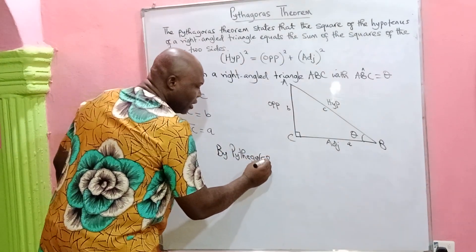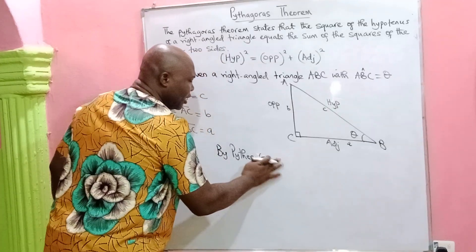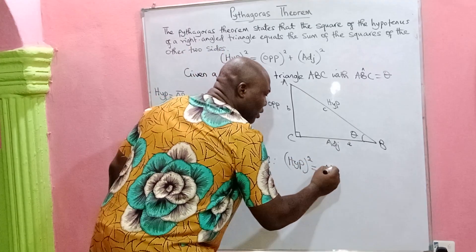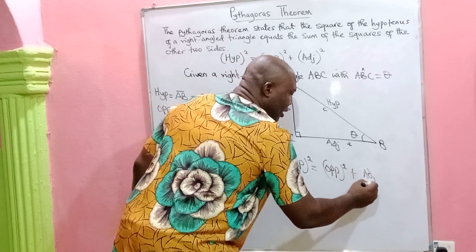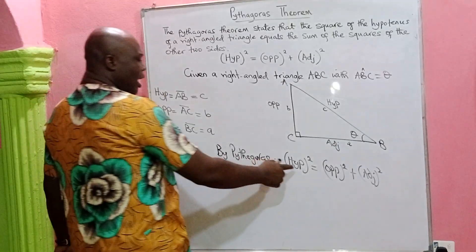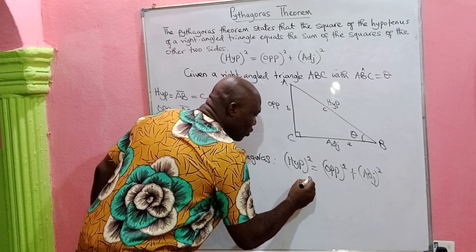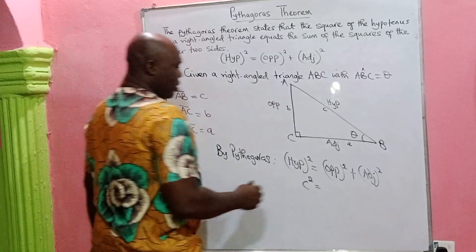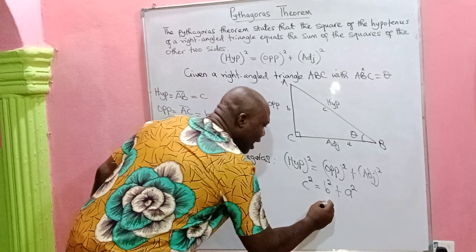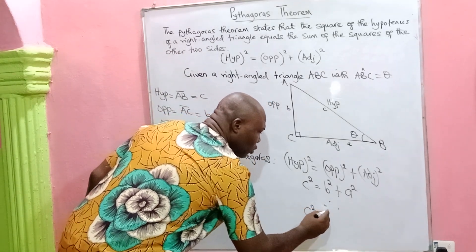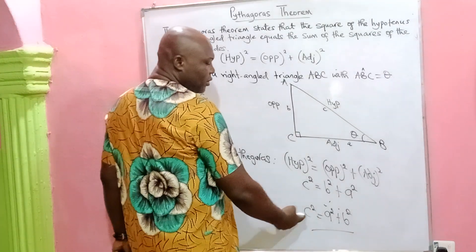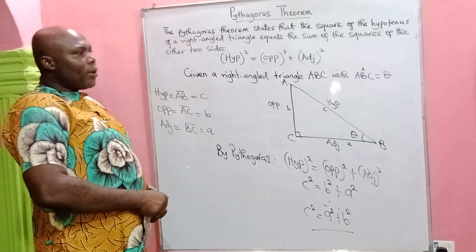The Pythagorean theorem states that the square on the hypotenuse equals the sum of the squares of the other two sides. So c squared equals b squared plus a squared. Therefore c squared equals a squared plus b squared. That is what the Pythagorean theorem states — the square on the hypotenuse equals the sum of the squares of the other two sides.